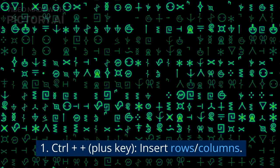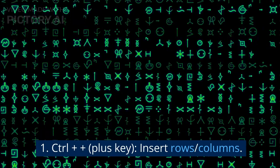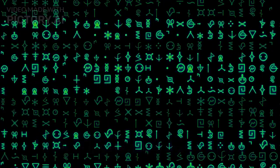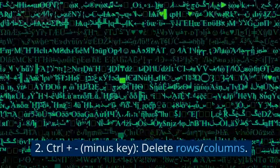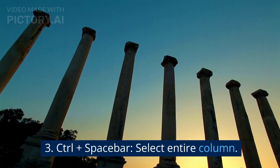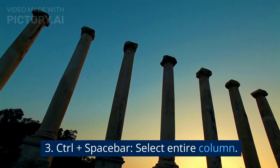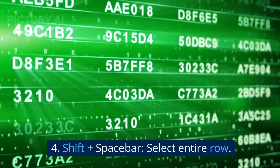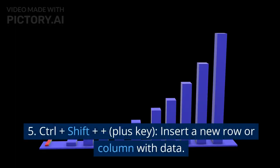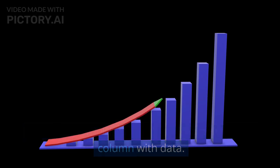Rows and Columns. 1. CTRL plus plus (plus key): insert rows or columns. 2. CTRL plus minus (minus key): delete rows or columns. 3. CTRL plus Spacebar: select entire column. 4. Shift plus Spacebar: select entire row. 5. CTRL plus Shift plus plus (plus key): insert a new row or column with data.